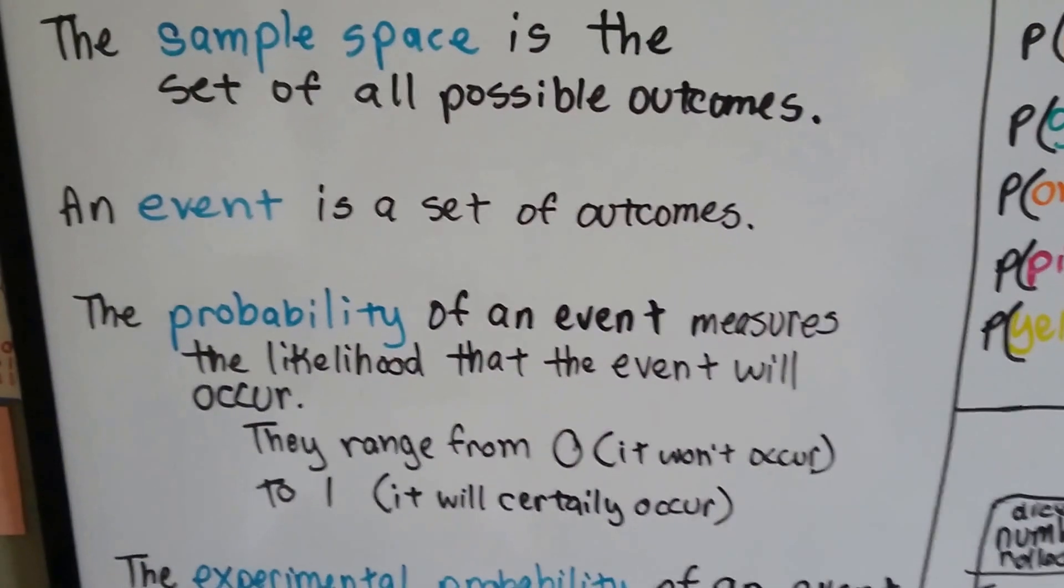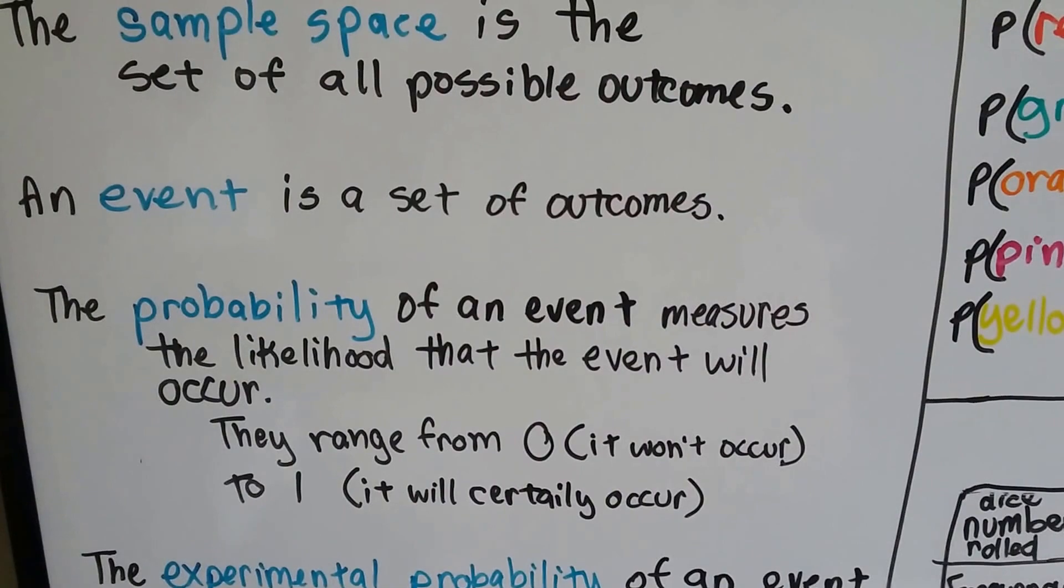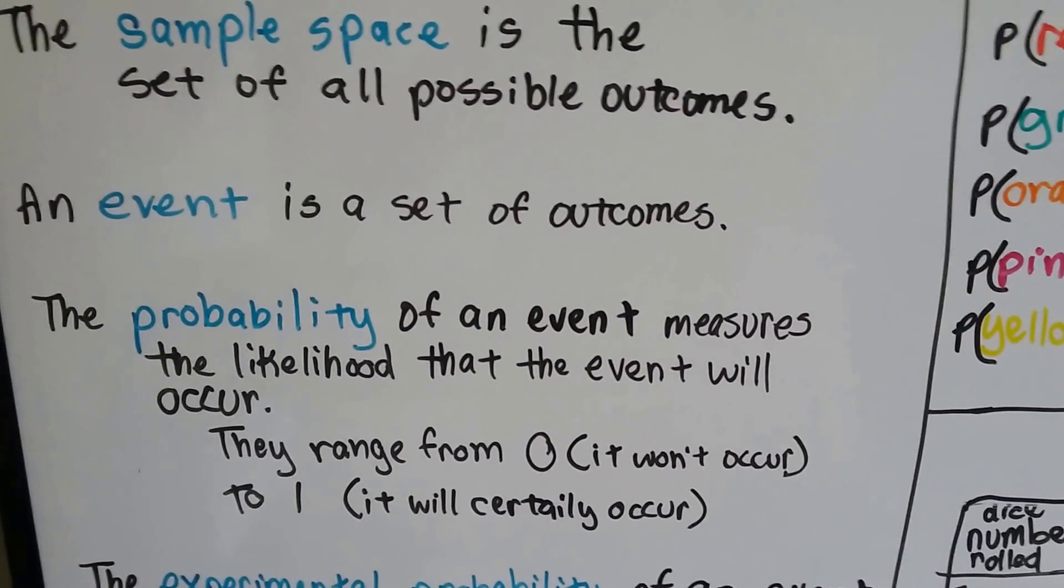The probability of an event measures the likelihood that the event will occur. It ranges from 0, it won't occur at all, to 1, it will certainly occur.